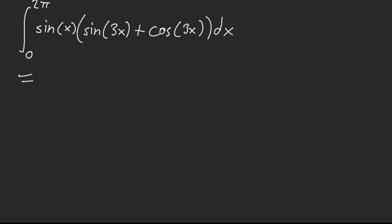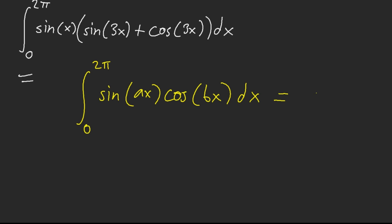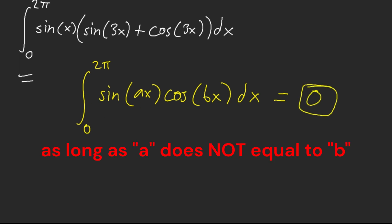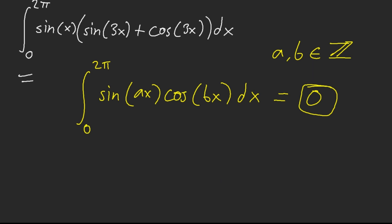Now, I showed you that this will always equal 0 no matter what the constants are — well, actually, I lied. A and B have to be different. And I believe A and B have to be integers as well. They must be integers — you can't use real numbers.